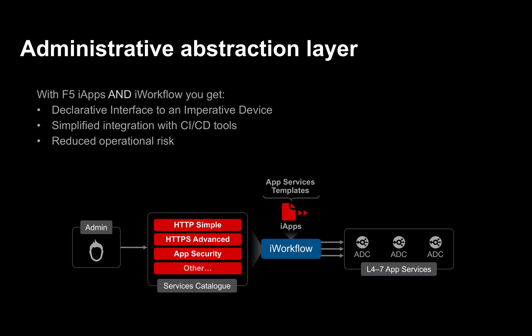More recently, iApps have made their way onto iWorkflow. iWorkflow is a REST API driven solution for presenting a services catalog, and that catalog is iApps. Originally iApps were made to run as a GUI wizard-type interface for F5's application delivery controllers, Big IP. But running through iWorkflow it's very much REST oriented, though you can use them through the iWorkflow GUI as well.